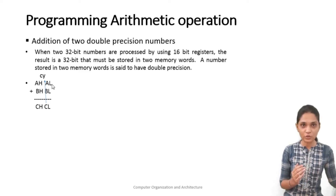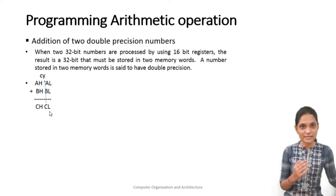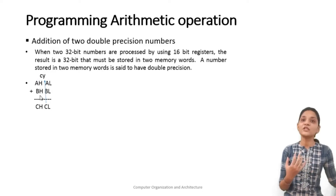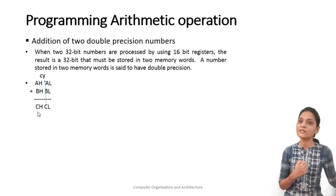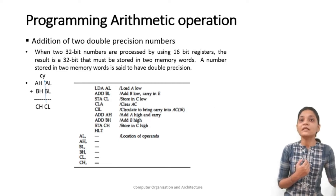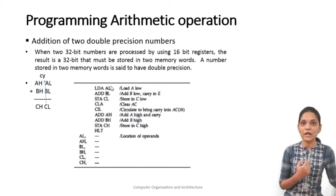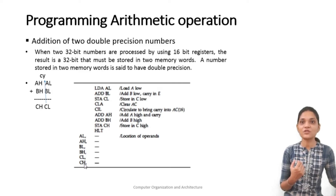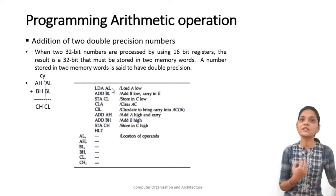For this we have to first load the number into the accumulator, then add the content of location BL, then store that result at location CL, then bring the carry into the accumulator, then add AH, then add BH into the accumulator. After that addition, store this result at location CH. In the first instruction, the content of AL location is loaded into the accumulator using LDA AL. We have given labels AL, AH, BL, BH, CH, CL and we are using these labels. We don't know at which location they are stored.